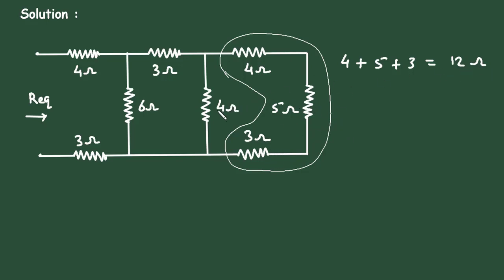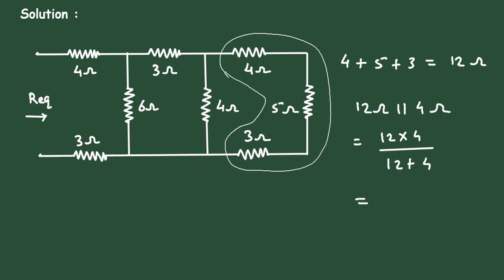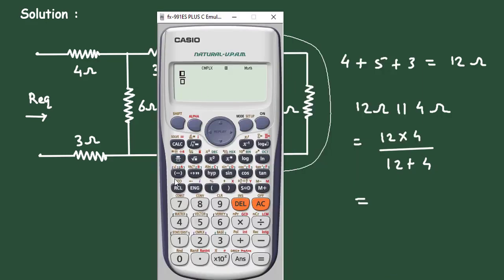Now this 12 ohm and this 4 ohm are connected in parallel. So 12 ohm parallel with 4 ohm, this will be 12 into 4 divided by 12 plus 4. If we solve this in calculator, it is 3 ohm.